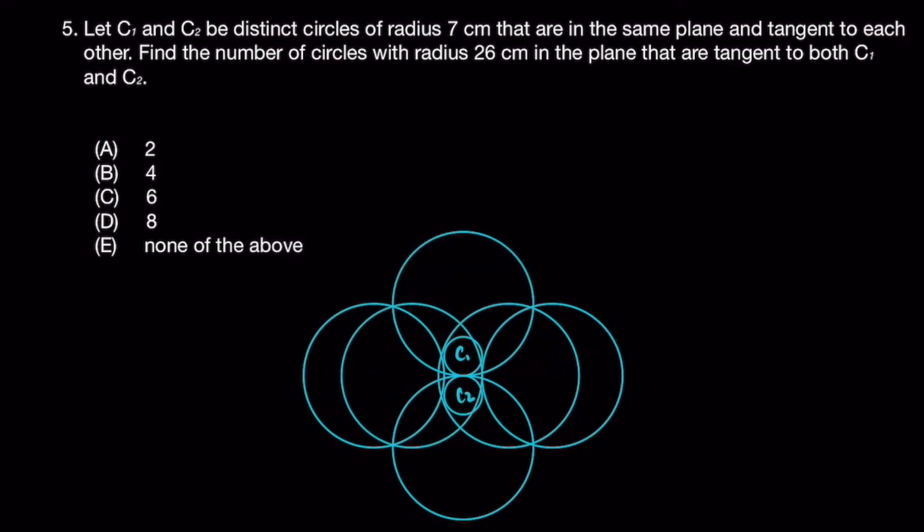So as you can see, there are total of six big circles which have radius of 26cm that are tangent to both C1 and C2. Therefore your answer is C.